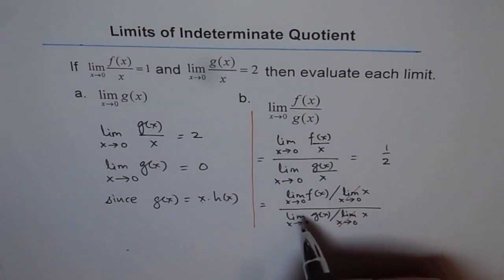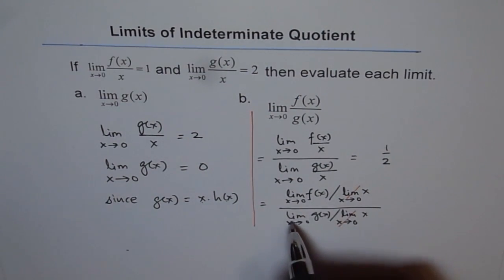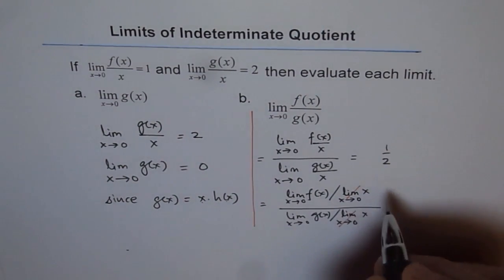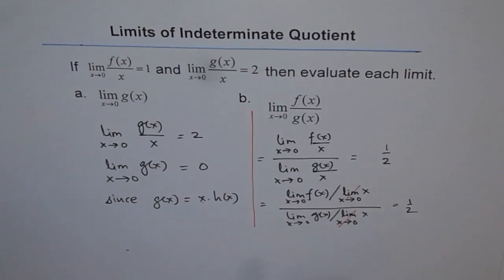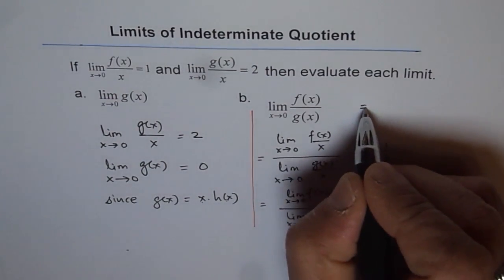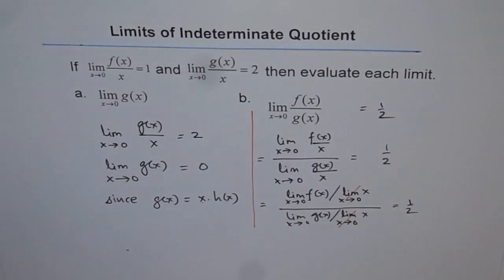Now clearly from here we can divide these two, they factor out and we are left with limit of f of x over limit of g of x which should be equal to half and therefore our answer for this is half. So that is how we are going to solve these questions. Thank you.